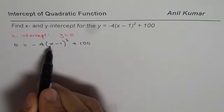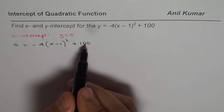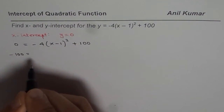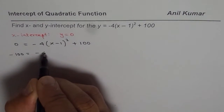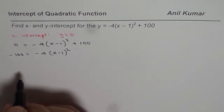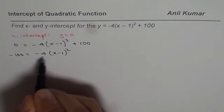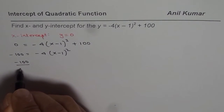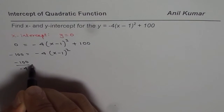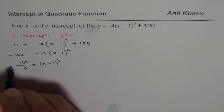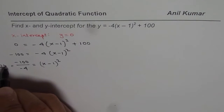Now we need to solve for x. I will take 100 to the other side, so we get minus 100 equals minus 4 times (x minus 1) squared. We can now divide by minus 4, so we get minus 100 divided by minus 4 equals (x minus 1) squared, and that gives us positive 25.